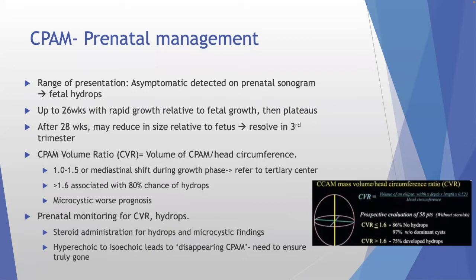The CPAM volume ratio (CVR) is the volume of the CPAM divided by head circumference, because lesion size alone means different things at different gestational ages. A CVR of 1.0–1.5 during the growth phase warrants referral to a tertiary center capable of fetal surgery. A CVR greater than 1.6 is associated with an 80% chance of hydrops. Microcystic lesions have a worse prognosis and don't respond as well to thoraco-amniotic shunting. Serial imaging during the growth phase is critical, monitoring CVR and hydrops.